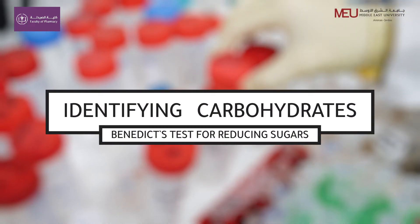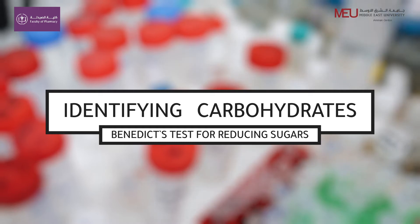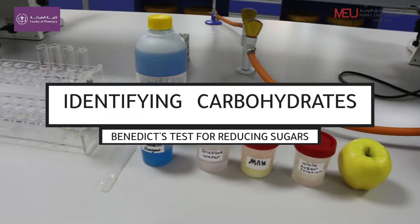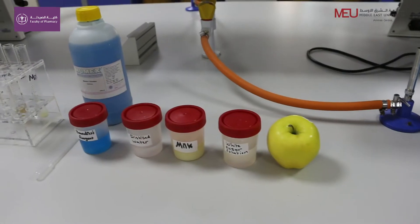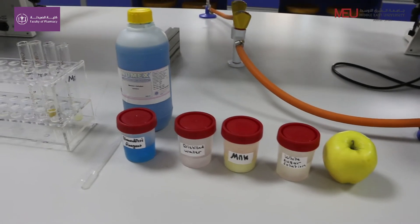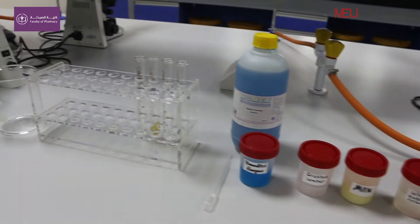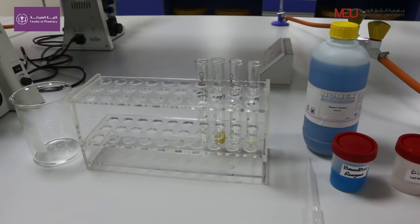Identifying Carbohydrates. Benedict test for reducing sugars. A commonly used test to detect carbohydrates is the Benedict test for reducing sugars such as glucose and fructose.